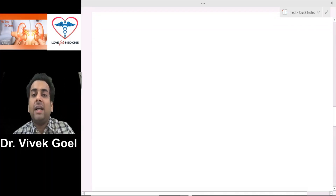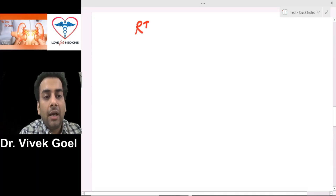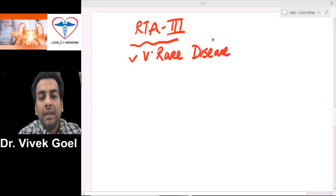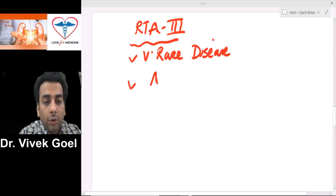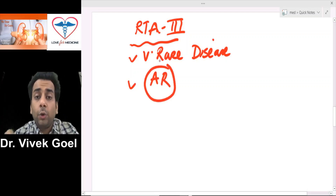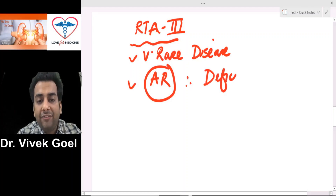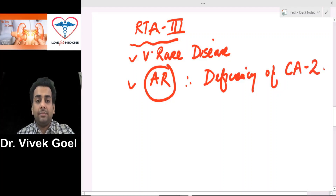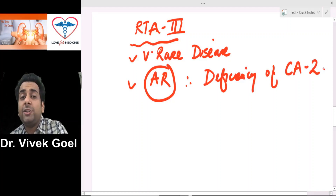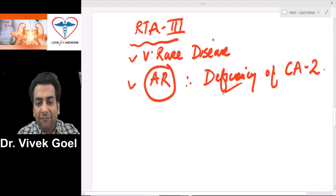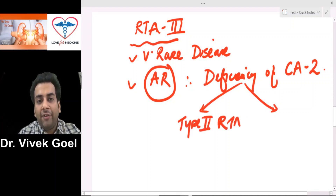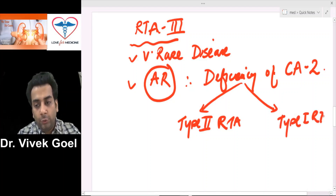So what is RTA Type 3? At the onset, let me tell you it is a very rare disease. It is an autosomal recessive disease, characterized by deficiency of the all-important carbonic anhydrase 2 enzyme. Due to this deficiency, it will lead to features of both Type 2 RTA and Type 1 RTA.